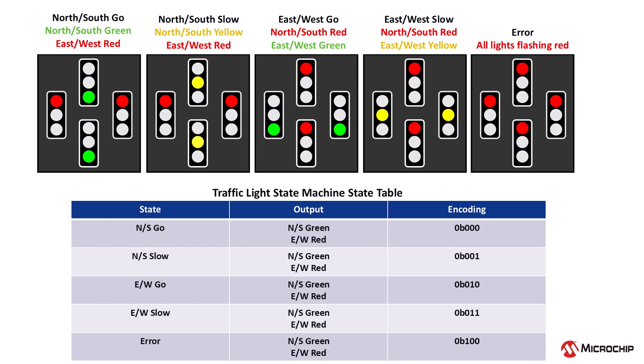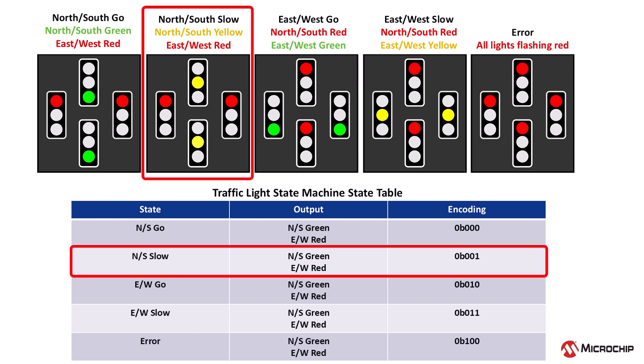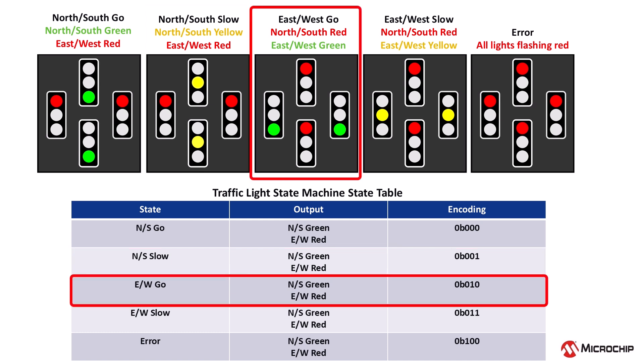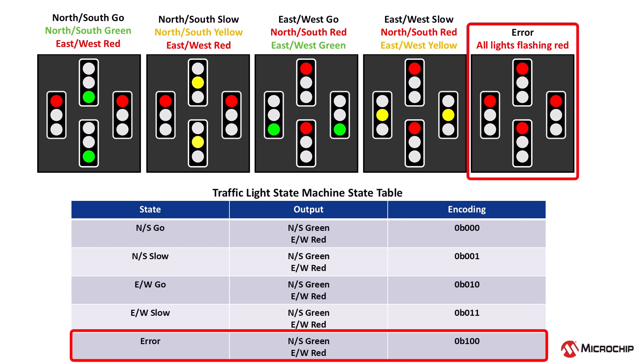On the screen, we have a breakdown of each state. First, we have north-south-go, when north and south traffic moves freely while east and west must stop. Next, north-south-slow, when north and south traffic prepares to stop. Next, east-west-go, when east and west traffic moves freely while north and south must stop. Next, east-west-slow, when east and west traffic prepares to stop and drivers should slow down. And finally, we have an error state for emergencies or system errors, where all traffic will stop until the issue is resolved.